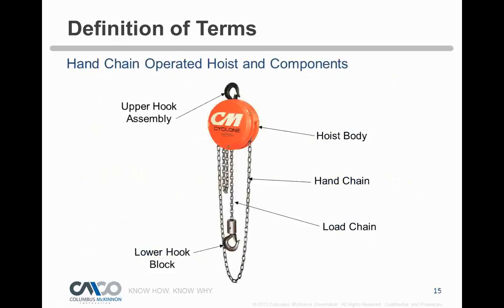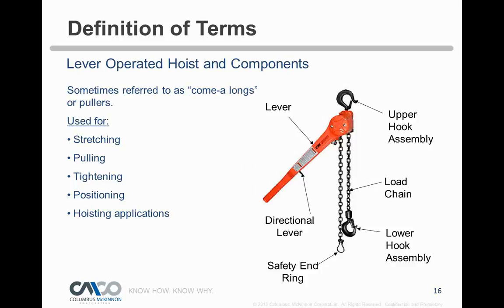We're talking about manual hoists today — what people call a chain fall. It's suspended by an upper hook, and has a hand chain which is non-load bearing, and a load chain which is load bearing, plus a lower hook block. We'll also cover lever tools, sometimes called come-alongs, used for stretching, pulling, tightening, positioning, and hoisting. A lever tool can be used as a hoist and isn't much different from a chain fall except for the means of raising and lowering.